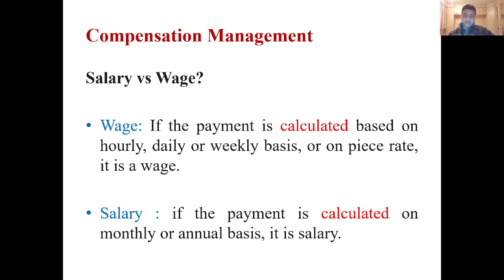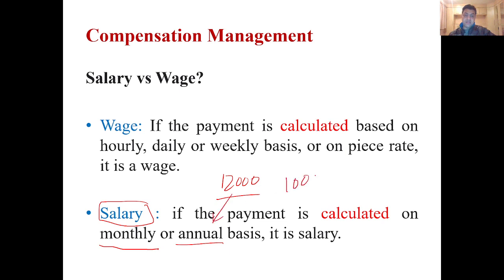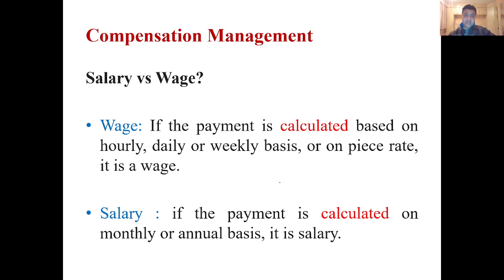With salary, the contract is usually mentioned on a monthly or annual basis. You perform certain assigned tasks — sometimes fixed, sometimes flexible — but the monthly salary remains fixed and is calculated based on how many months or years you have worked. For example, an annual salary of 12,000 means every month you receive 1,000 rupees or dollars. It is not about when you make the transaction, but how you are calculating it that defines whether it is a wage or a salary.